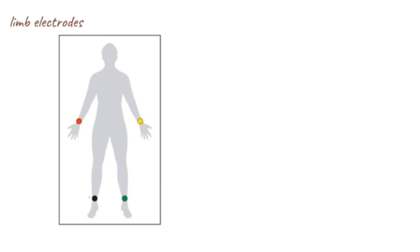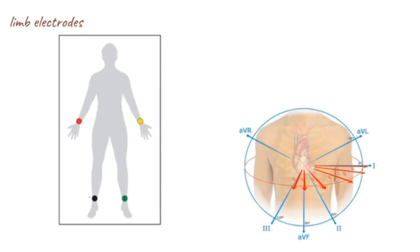The right leg electrode is a neutral electrode and is only present to complete the electrical circuit. It plays no role in the formation of the ECG itself. The 10 electrodes mentioned above produce 12 different views of the heart, also called 12 leads.